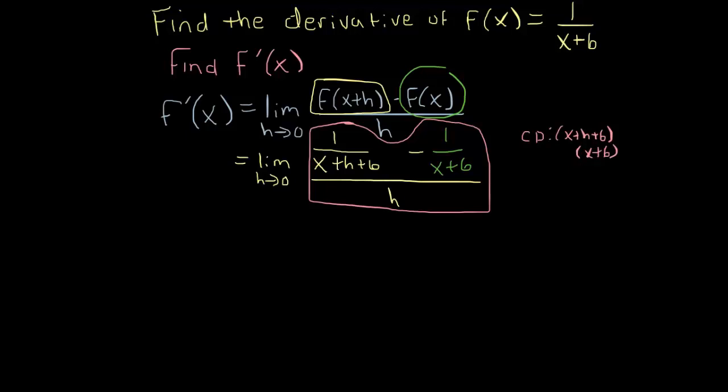Okay, so this denominator is missing x+6, so I'd multiply the top and the bottom of that by x+6.